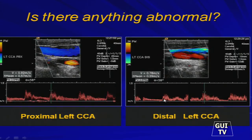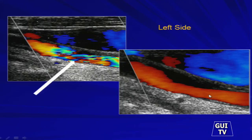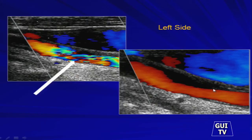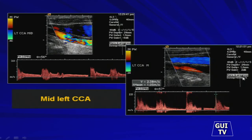What I am seeing is evidence of a delay in upstroke compared to the proximal site. The reason for that is the stenosis that lies between our proximal sample site and our distal sample site. We've got luminal reduction, alias signal, and stenosis there — that's causing the problem. Here's our stenosis and our disordered flow.